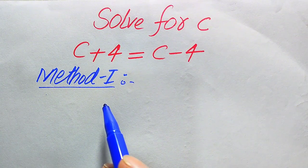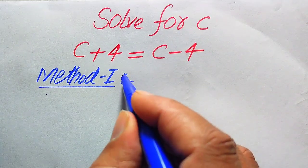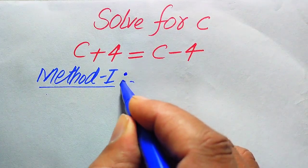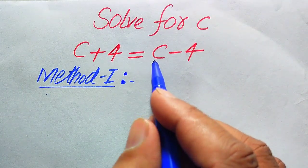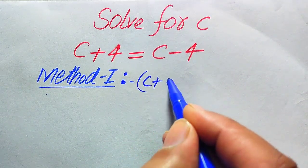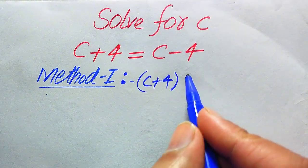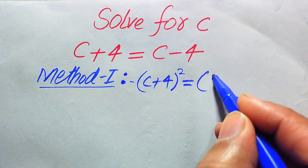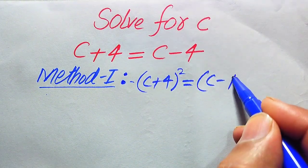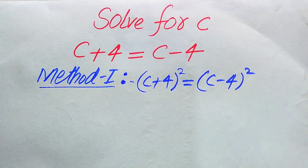In the first method, I will give you a technique to easily find the roots. The first step is to square both sides. When we apply squaring, it becomes: (c + 4)² = (c − 4)².